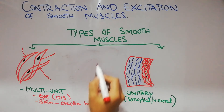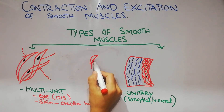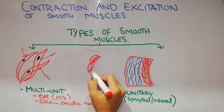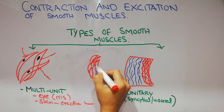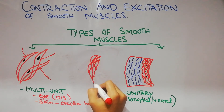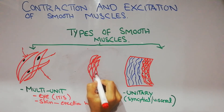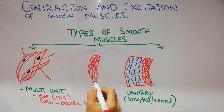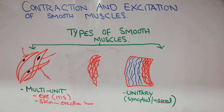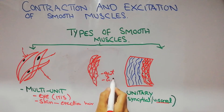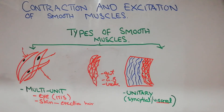The other type is the unitary smooth muscles. In this type, a lot of small smooth muscle fibers combine together to make a sheet. Smooth muscles are classified according to their presence in sheets or not, their functions, their innervation, and the effect of different hormones. In unitary smooth muscles, different fibers of the smooth muscle combine together to form a sheet. They are also known as visceral smooth muscles because they are present in the gut, gallbladder, and ureter.